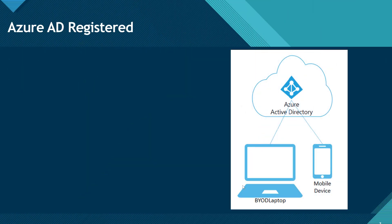Let's start with the first one: Azure AD Registered. As you can see in the figure, Azure AD Registered is most applicable for bring your own device scenarios — personal devices. For example, your own personal laptop or mobile phone which you need to use to access company resources such as Microsoft 365 or Microsoft Teams.